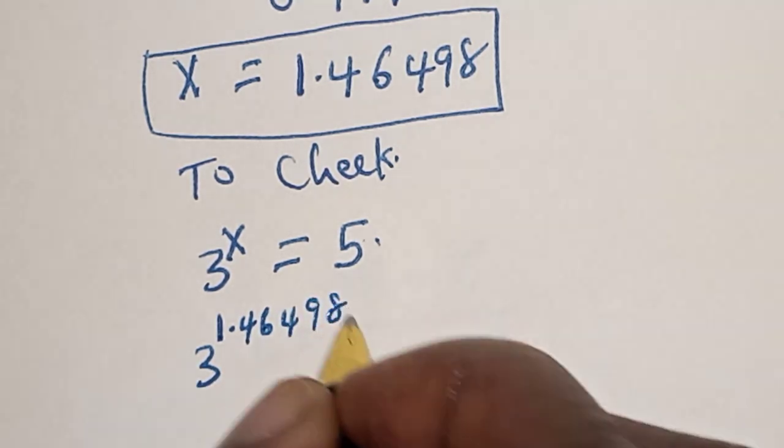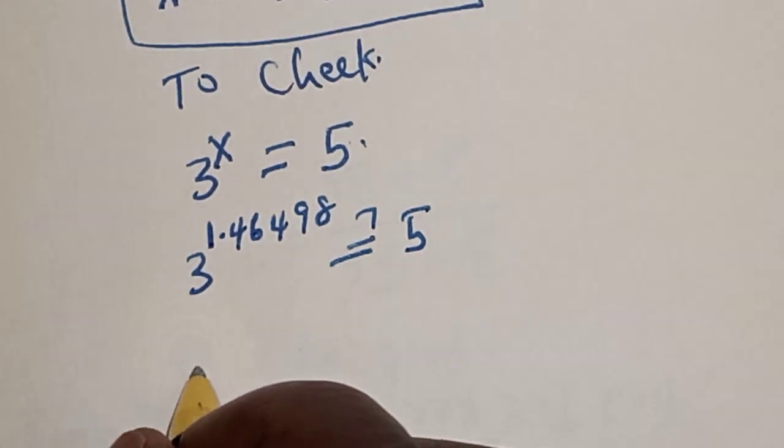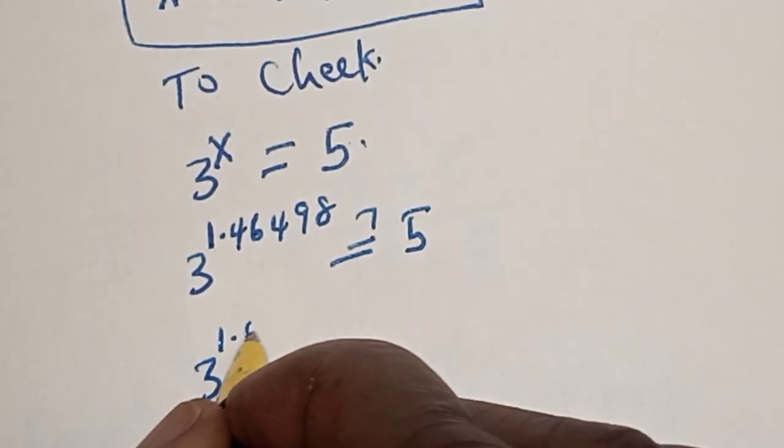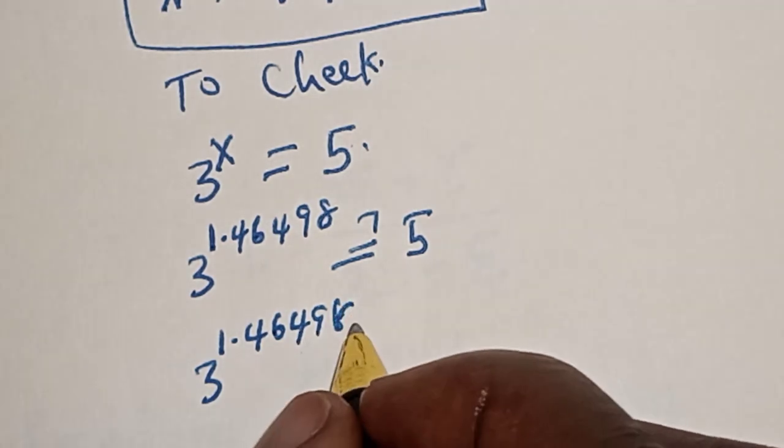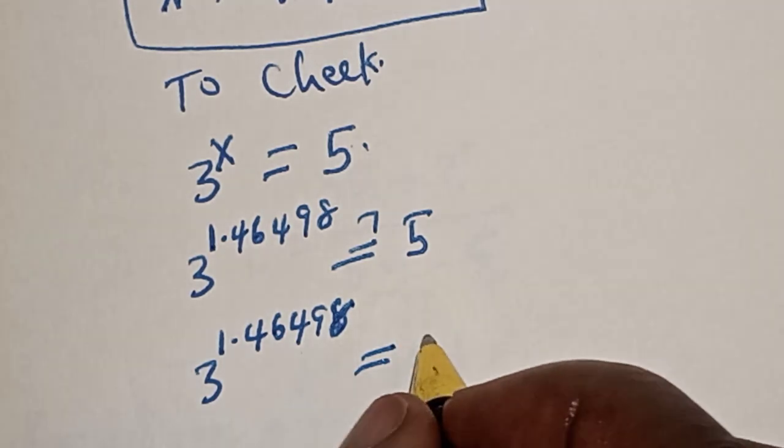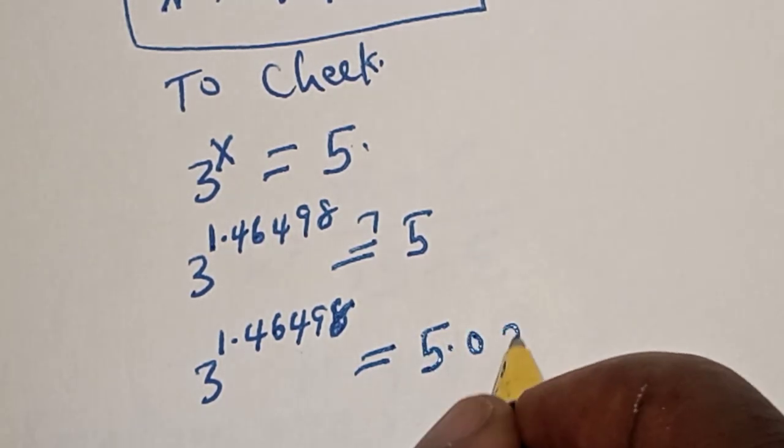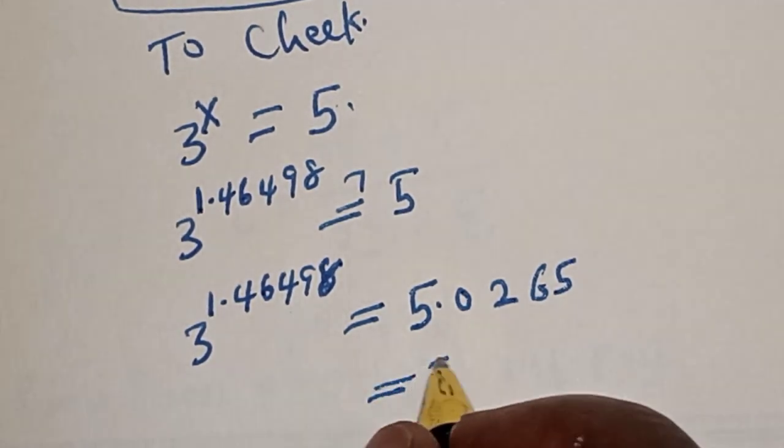Let's see now. 3 raised to power 1.46498, if you press your calculator very well, is equal to 5.0265, which is equal to 5.0.